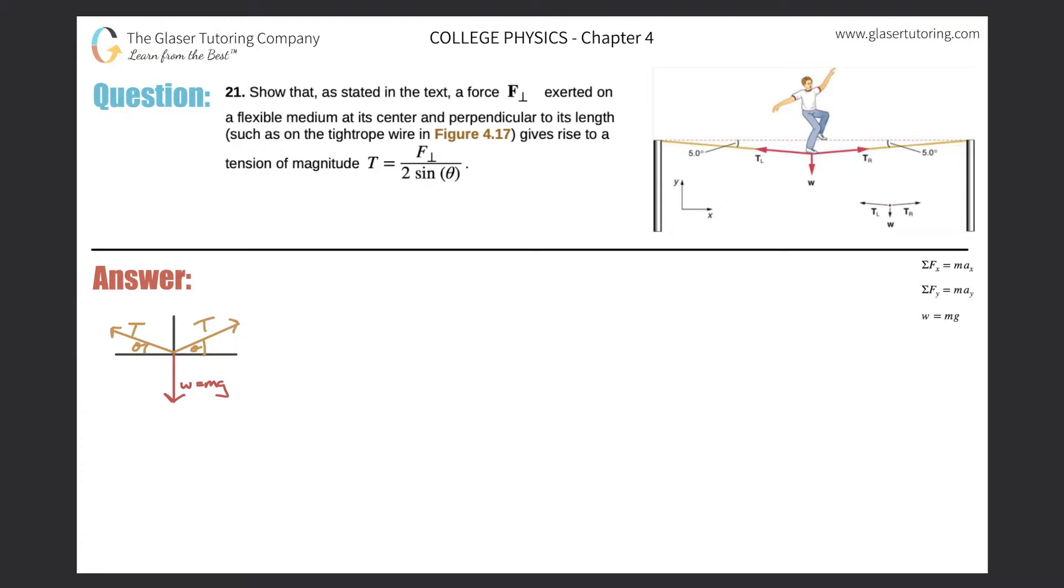Number 21: Show that as stated in the text, a force F perpendicular exerted on a flexible medium at its center and perpendicular to its length, such as in the tightrope figure 4.17, gives rise to a tension of magnitude of this thing. Okay, if you understood that, you're better than me.